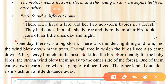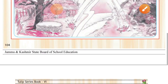Unfortunately for the baby birds, the strong wind blew them away to the other side of the forest — unko jungle ki doosri side bhej diya. One of them came near a cave where a gang of robbers lived. The other landed outside a rishi's ashram a little distance away. Ashram is a religious place in Hindu religion — ek ashram ke paas ja gira, aur doosra choron ke gang ke paas.